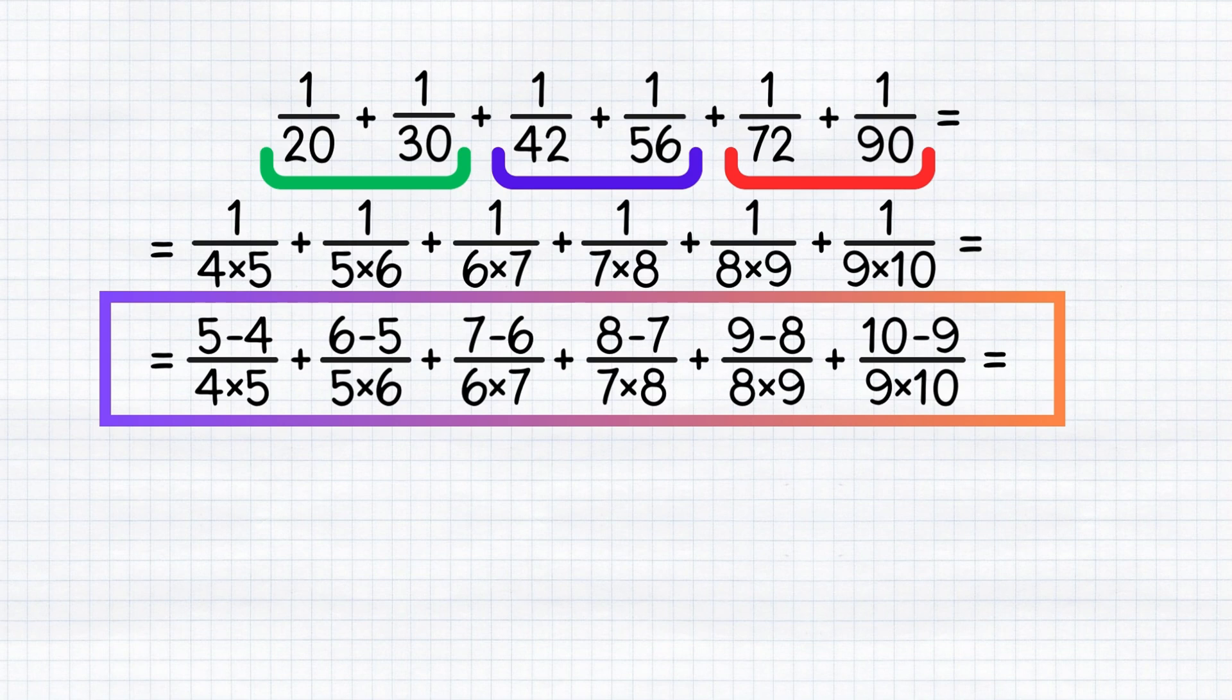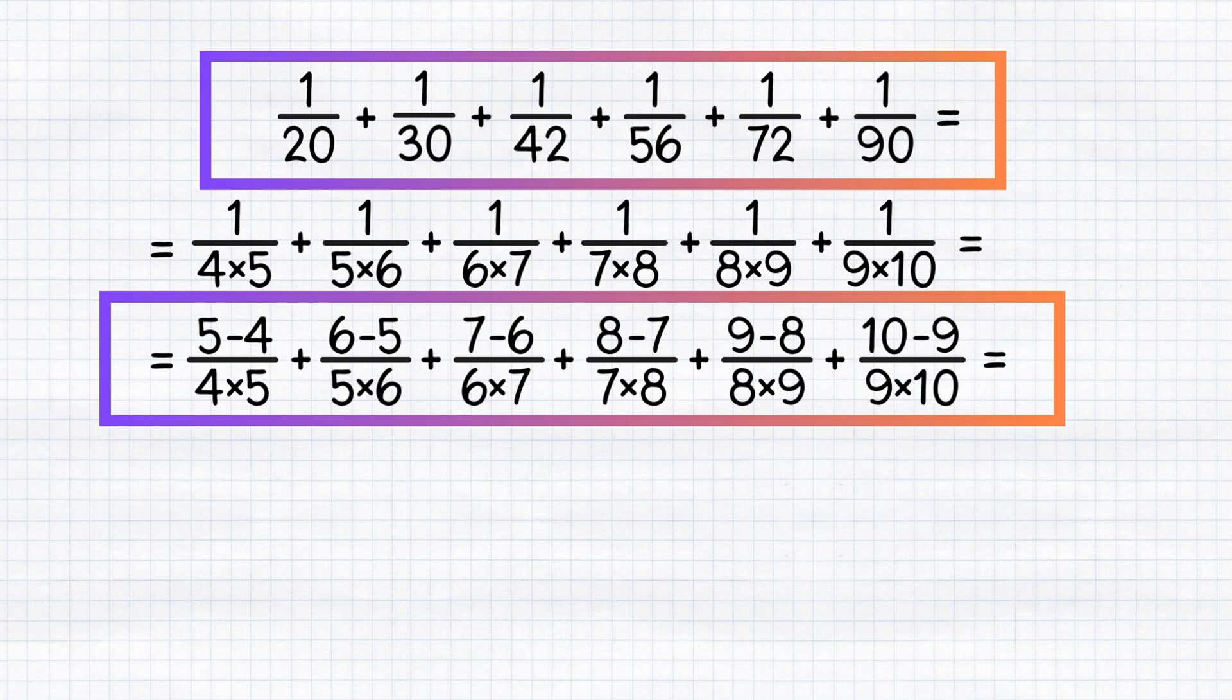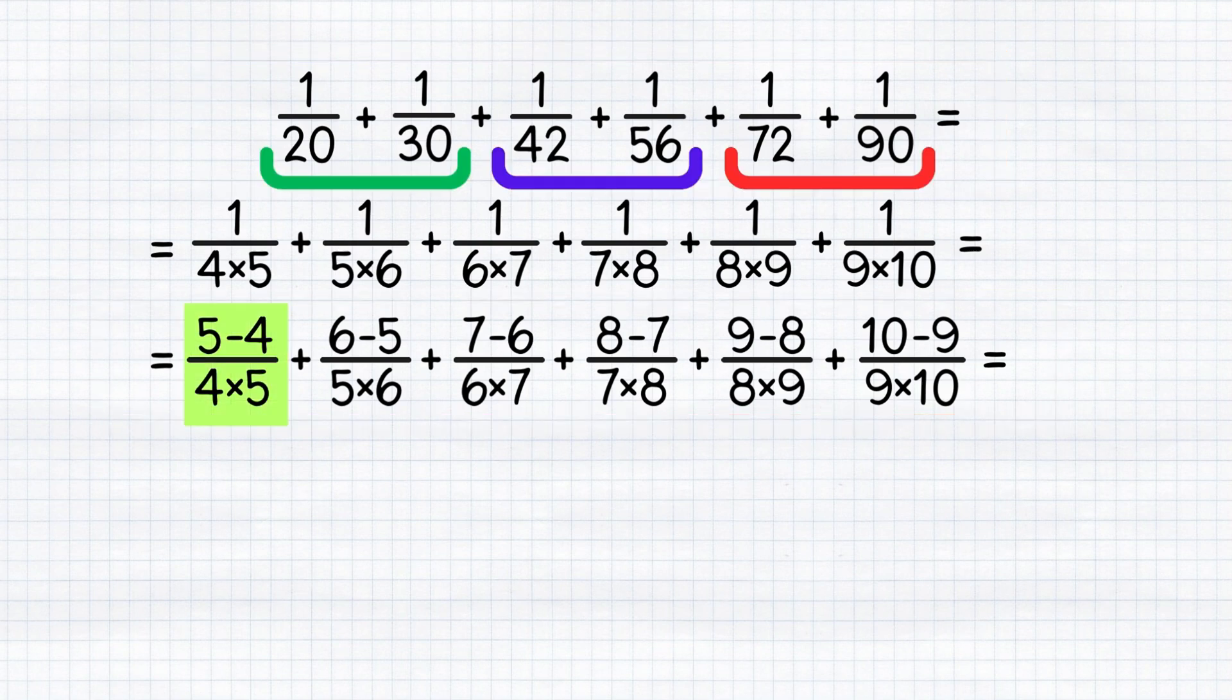This mathematical expression is the same as this one, we've just expressed it in a different way. Now, let's divide these big fractions into smaller ones. This would be 5 over 4 multiplied by 5 minus 4 over 4 multiplied by 5 plus 6 over 5 multiplied by 6, and so on.